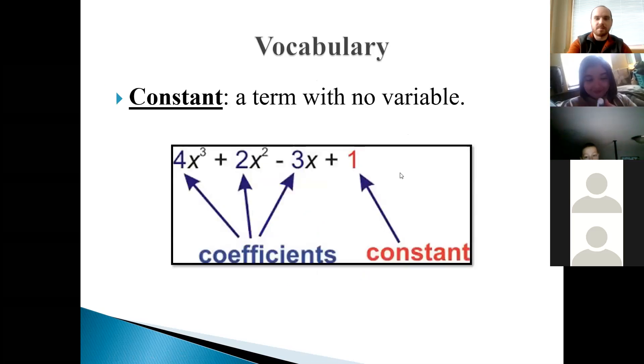Next one, constant. This is a term with no variable. So, basically, it's just a plain number. A plain number is a constant. So, in this case, it's just the one. The 4x cubed is not a constant. The 2x squared is not a constant. The 3x is not a constant, but the one is a constant. Each one of these is a term, but 1 is a constant, and as you'll see with the next definition, these three are all coefficients.